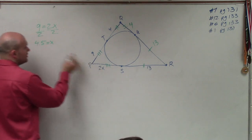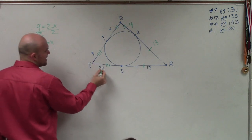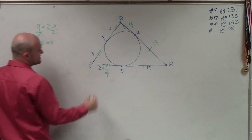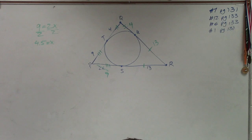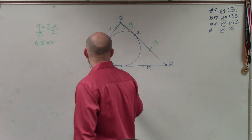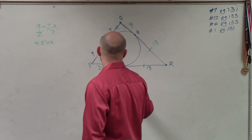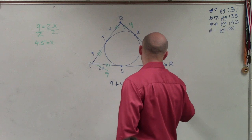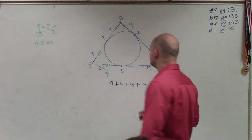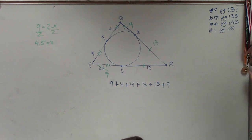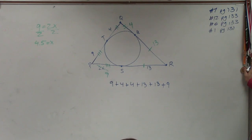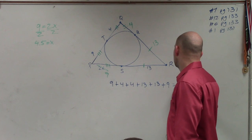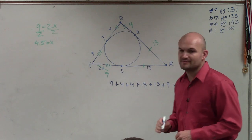So therefore, 4.5 equals x, but if that's 9, then we know that that's 9 as well. So now to find the perimeter of the triangle, I just add up all my lengths. So I have 9 plus 4 plus 4 plus 13 plus 13 plus 9. That gives me 8, 17, 20, 30, 43, 52. So therefore, the perimeter is 52.